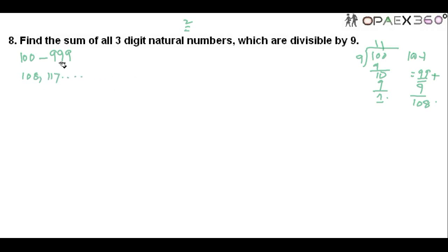What is the last number? You know 999. Definitely this is divisible by 9. So the last digit is 999. So you got the series.